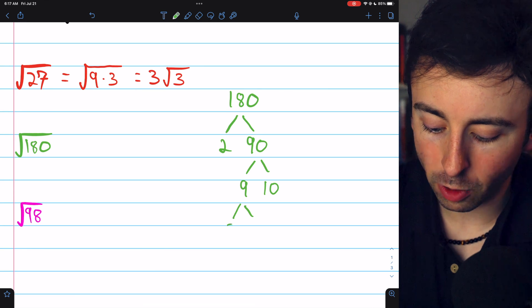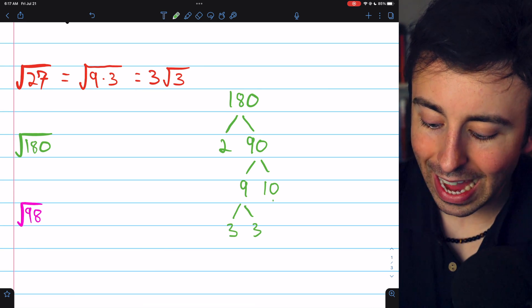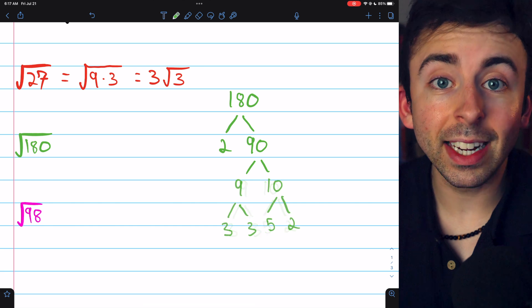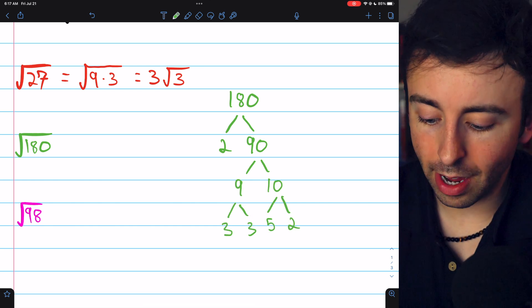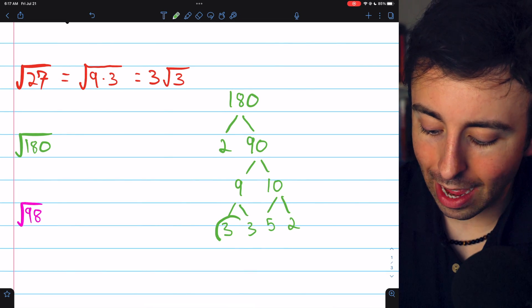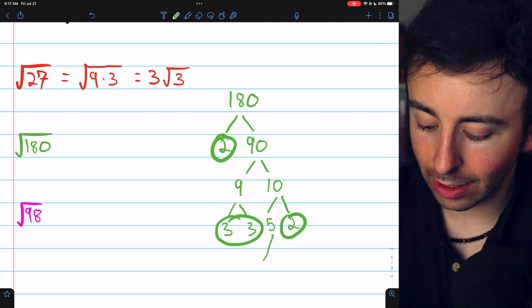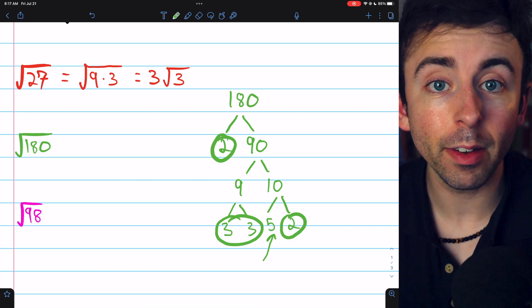90 we could factor as 9 times 10. 9 we could factor as 3 times 3, and 10 we could factor as 5 times 2. Then it is evident that in the factorization of 180, we have 3 squared, and we have 2 squared, and a lonely factor of 5.